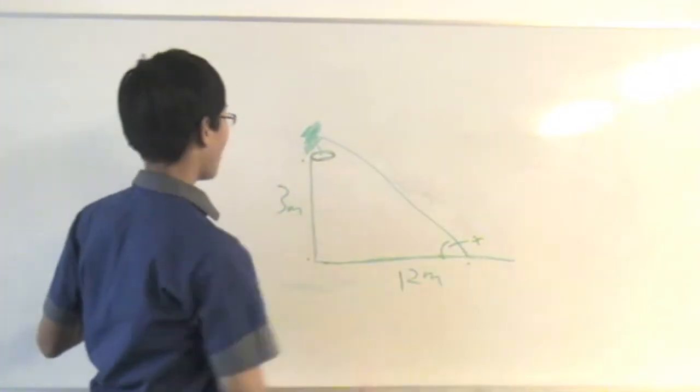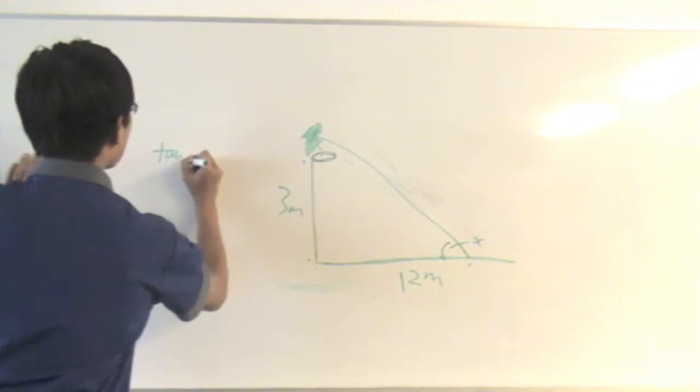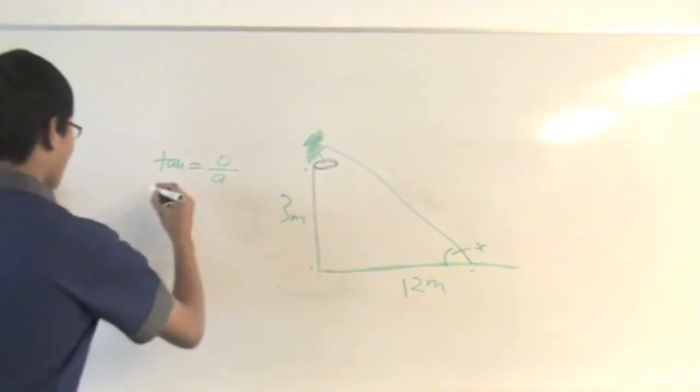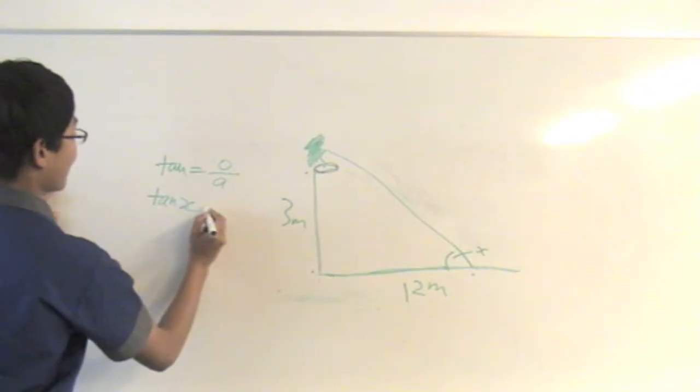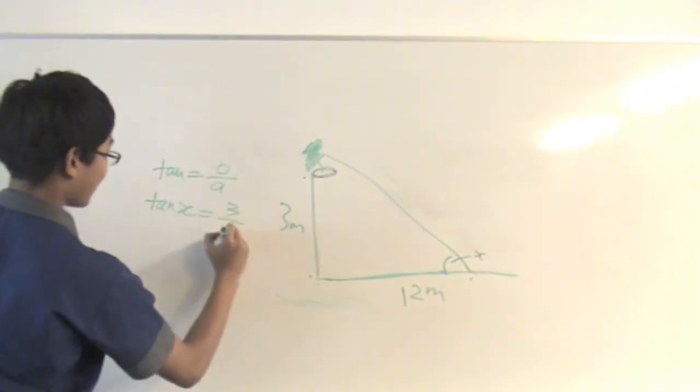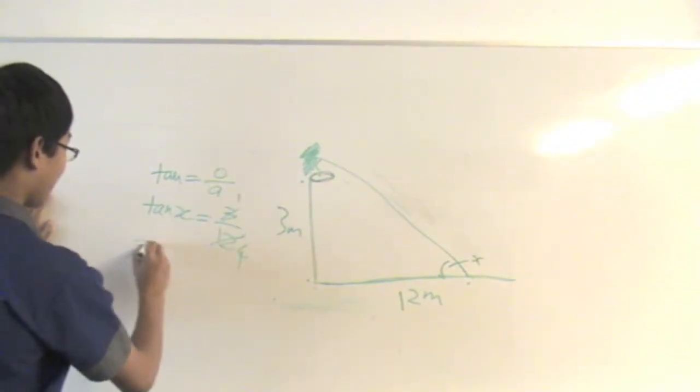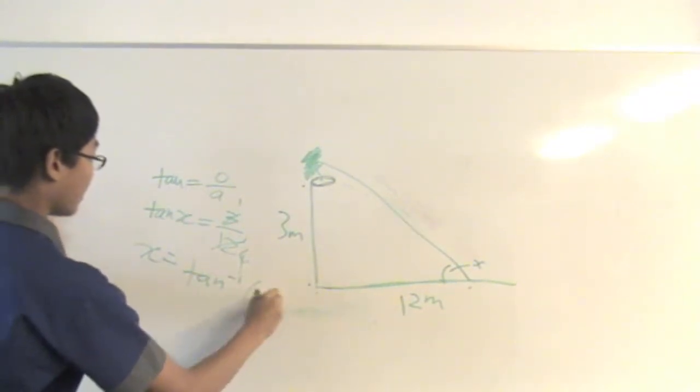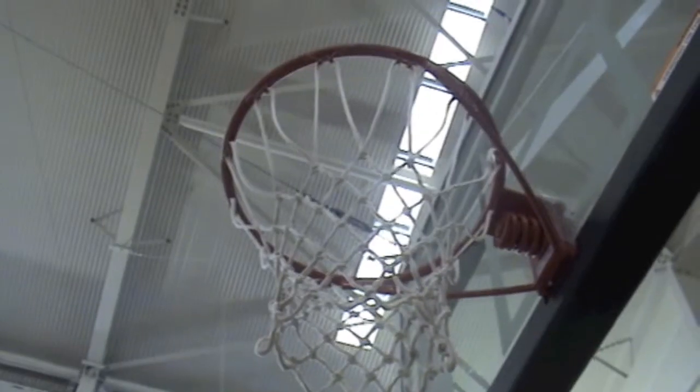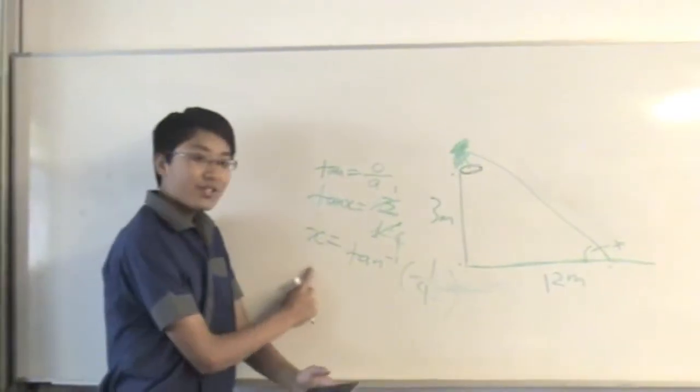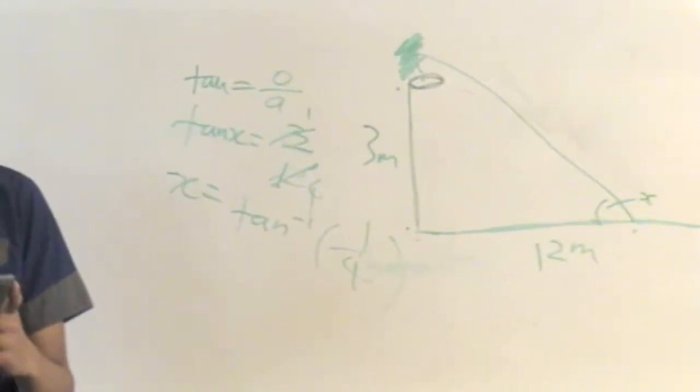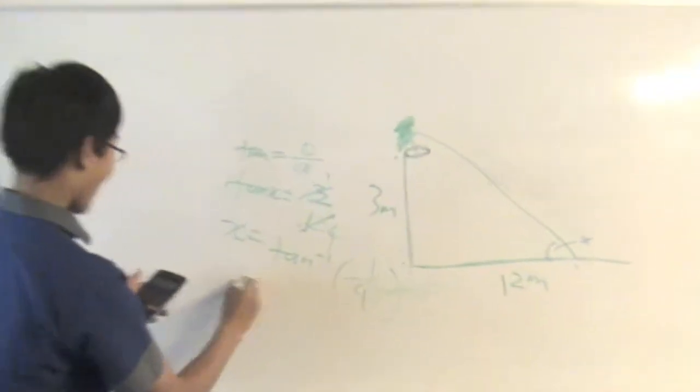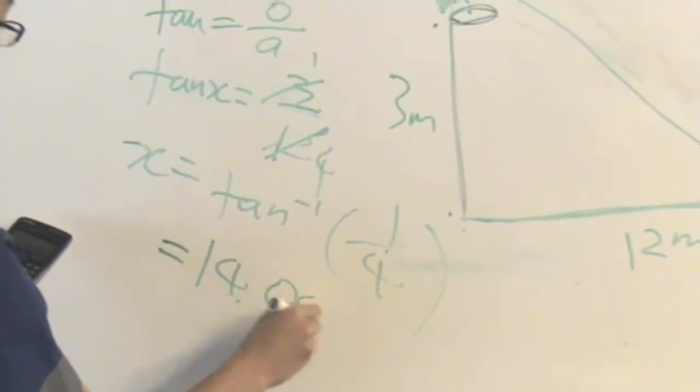So in order to figure out this angle x, let's use tan. That rule is opposite over adjacent. Therefore, that angle would be tan x equals 3 over 12. Then x would equal tan to the negative 1. Chuck this juicy equation into the calculator and the answer is, rounded off to two decimal points, 14.04 degrees.